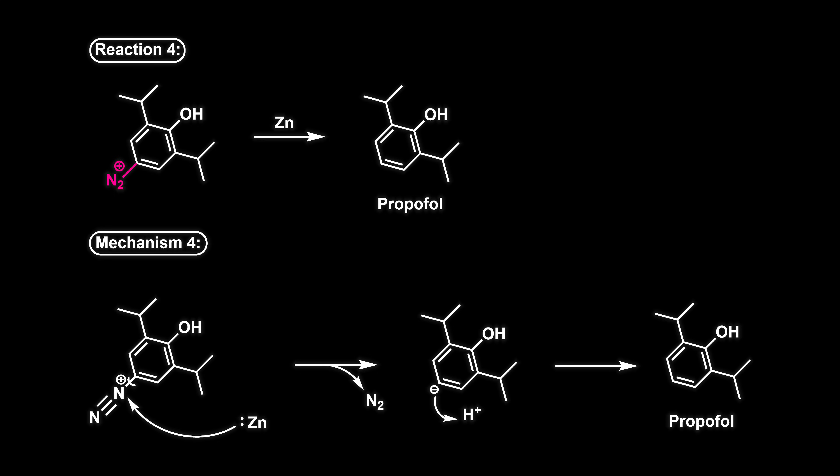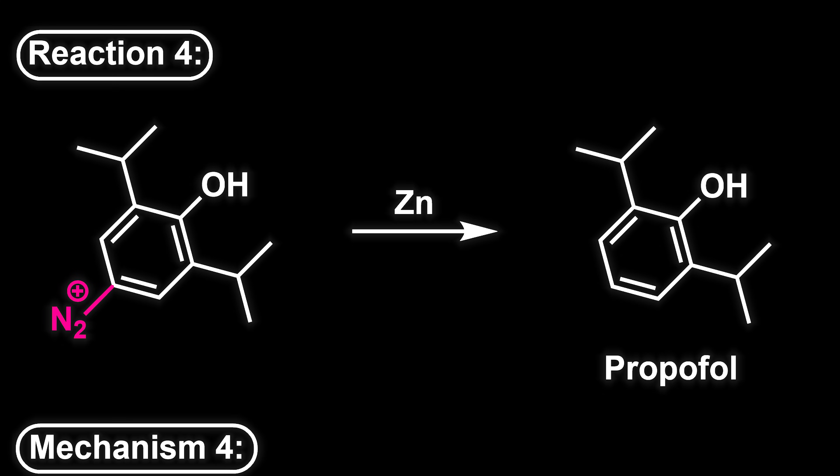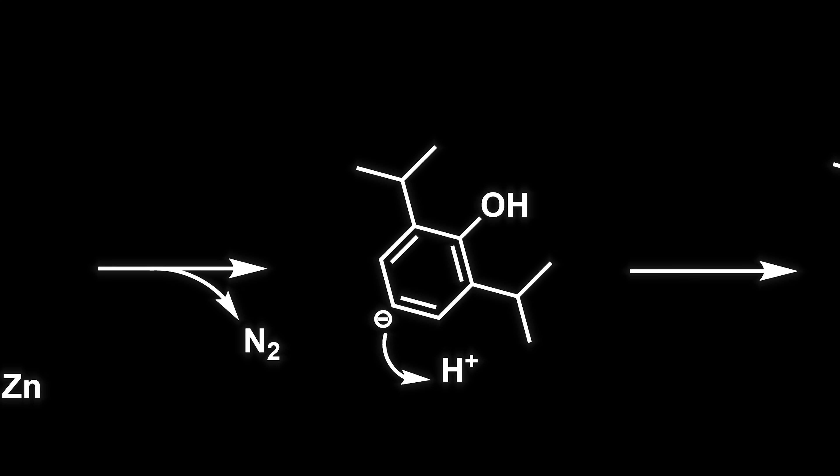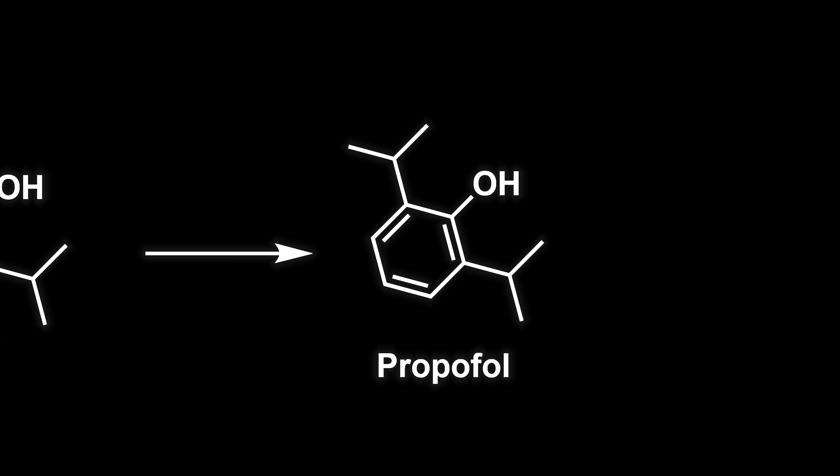The last mechanism I'm kind of just taking a guess at. I don't know if it's a radical that's formed or not, but this is just how I think it happens. If anybody knows please put it down in the comments, I would love to learn. In reaction four all we're going to do is add some zinc powder which will reduce this diazonium ion to propofol. What I think happens is zinc will donate two of its valence electrons to the positively charged nitrogen and it will leave as nitrogen gas. This would create an aryl anion which just abstracts the hydrogen proton from the environment and thus giving us propofol. Again I don't actually know if this is the mechanism but fuck it we ball.